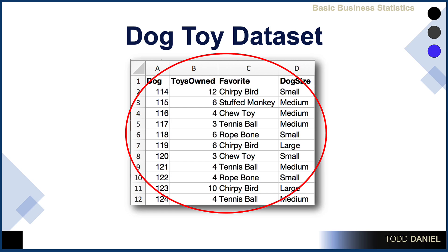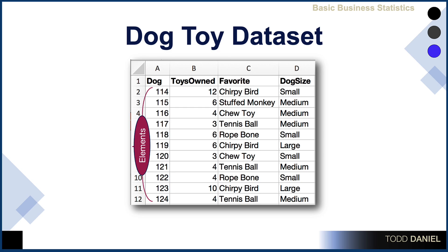In the first column, we see 'dog' followed by specific numbers. Those are random identifiers for each dog — they keep each dog anonymous so that we can protect their privacy. Each of those numbers represents an element. If these were people in this data set, they would be the participants, each participant having information only about that one person in a given row.